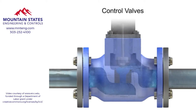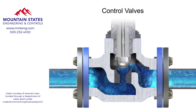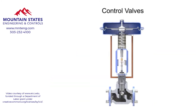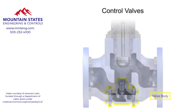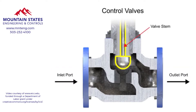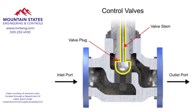Control valve actuators control fluid in a pipe by varying the orifice size through which the fluid flows. Control valves contain two major components: the valve body and the valve actuator. The valve body provides the fluid connections and a movable restrictor comprised of a valve stem and plug that is in contact with the fluid that varies the flow. The valve actuator is the component that physically moves the restrictor to vary the fluid flow.